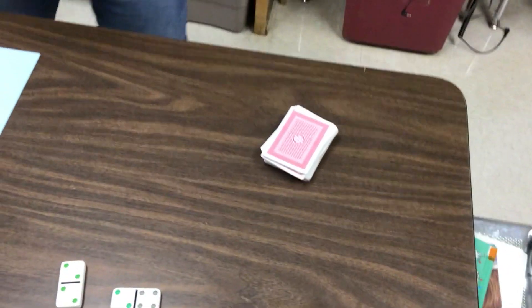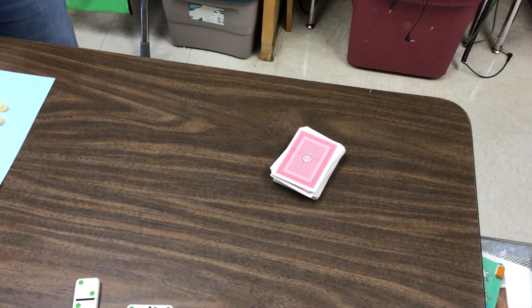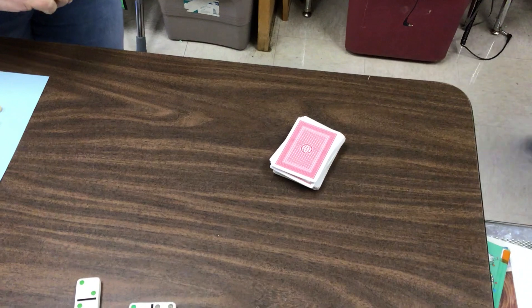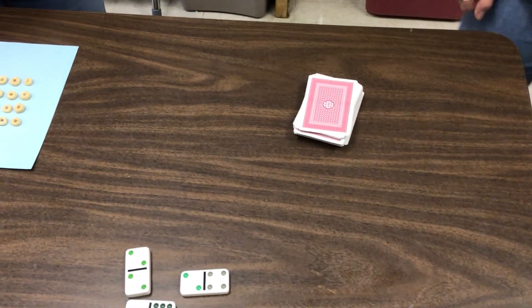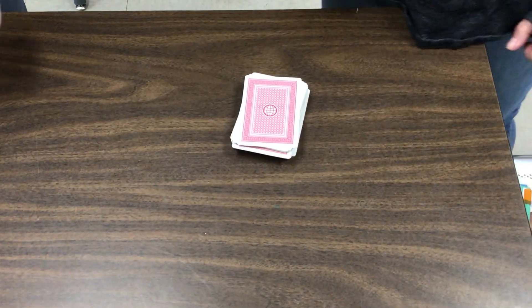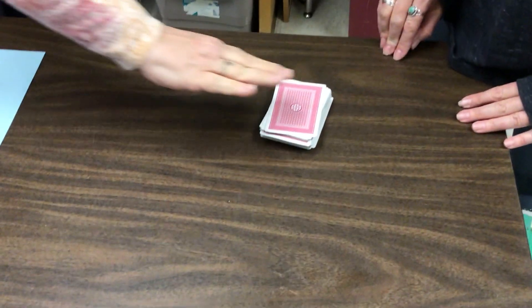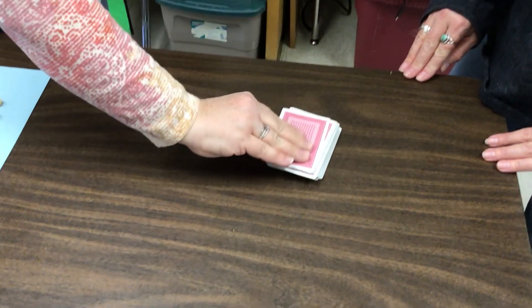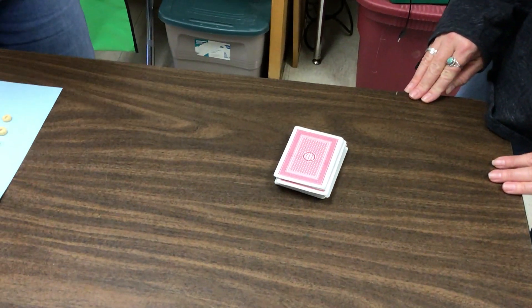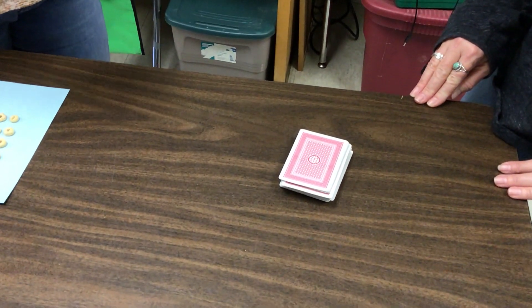Our next activity is using playing cards. You can do this one at a time, one person, or you can do it with two or three people. The idea is to pull two cards. If you know the product of the two factors, then you get to keep the cards.